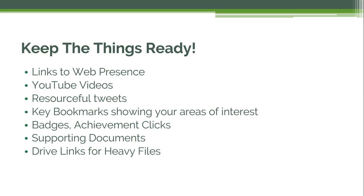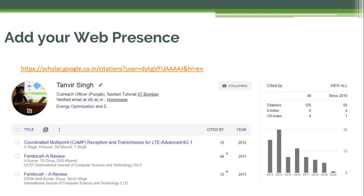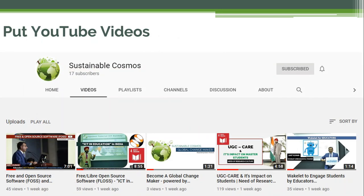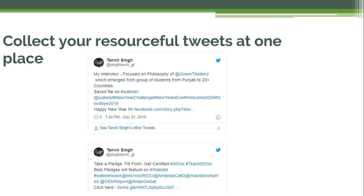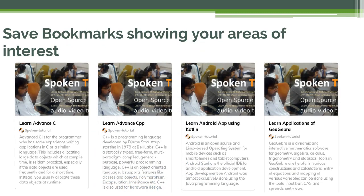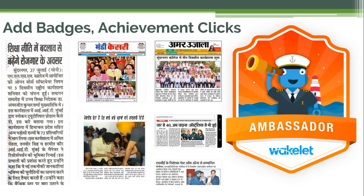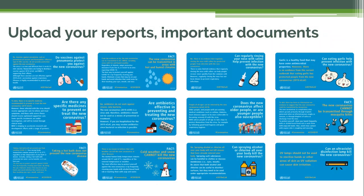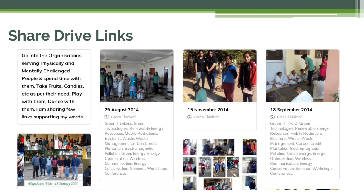To do this, you need to have these things ready: links to your web presence, YouTube videos, resourceful tweets, key bookmarks showing your areas of interest, badges and achievement clicks, supporting documents, and Drive links for heavy files. This is how each element will look once added — your web presence, YouTube videos, tweets, bookmarks, badges, achievement clicks, reports, documents, and Drive links.